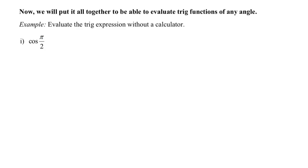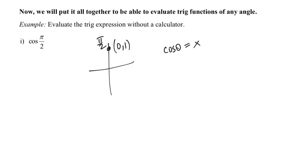I'm going to sneak in one more quadrantal angle example, which we did earlier: cosine of pi over two. That's quadrantal because it's at the top of my unit circle — the point (0, 1). Cosine theta equals the x-coordinate, so the x-coordinate at pi over two is zero. As you're doing these, try to get faster and faster. Eventually we want to be able to do this within 15 to 20 seconds, maybe even less — being able to regurgitate these values quickly.